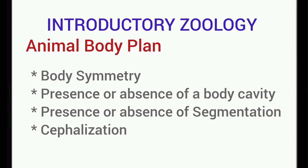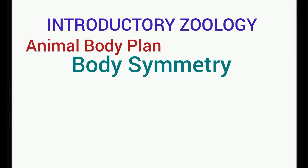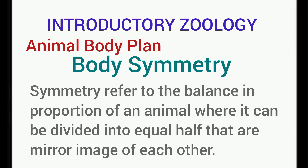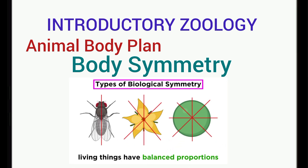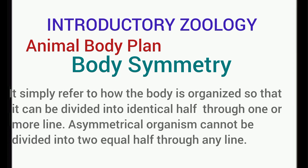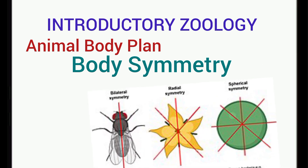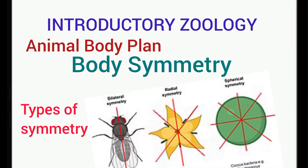Symmetry refers to the balance in proportion of an organism where the animal can be divided into two equal portions or parts. Most animals actually exhibit some form of symmetry, apart from sponges that are actually asymmetrical. Symmetry refers to how the body is organized so that it can be divided into identical halves through one or more lines. Asymmetrical organisms cannot be divided into two equal halves through any line. Symmetry is a basic feature of animal body.